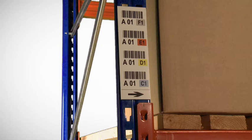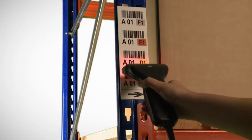If you don't have man-up trucks, a plate sitting on the upright frame at eye level enables the picker to scan the barcodes of the upper locations.